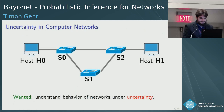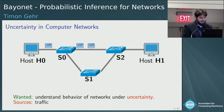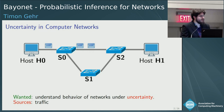This is a computer network, and we want to understand its behavior. But the issue is that some of its behavior is unknown — there's some uncertainty about it. For example, there's some traffic that will arrive at some point because somebody will send it over the network, and we don't necessarily control when that will happen. And even if there are bursts of traffic, we may still want to understand how often this traffic will actually overload our network.